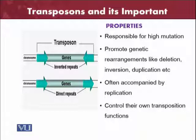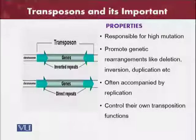They only use their own transposition functions. Using the diagram, the transposons' genes have inverted repeats, and they can move towards the chromosome or the chromosome towards the genes. Similarly, they can have direct repeats.